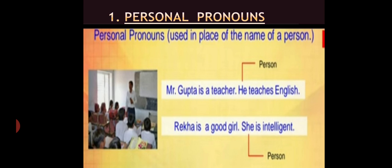For example, Mr. Gupta is a teacher. He teaches English. Rekha is a good girl. She is intelligent. Here, he stands for Mr. Gupta and she stands for Rekha. So he and she both are personal pronouns because they are using here in place of names of persons, whether it is Mr. Gupta or Rekha.